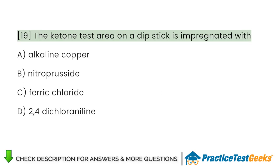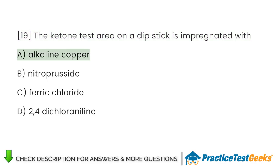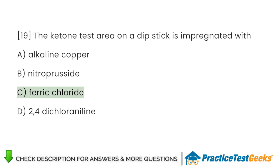The ketone test area on a dipstick is impregnated with: A. Alkaline copper. B. Nitroprusside. C. Ferric chloride. D. 2,4-dichloroaniline.